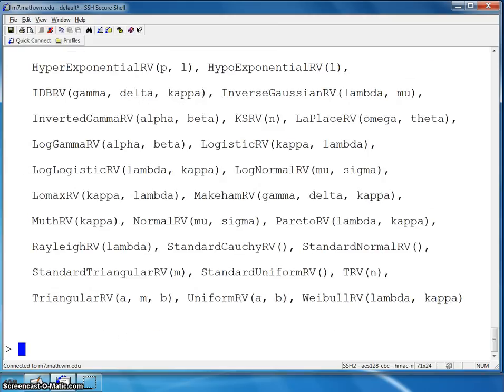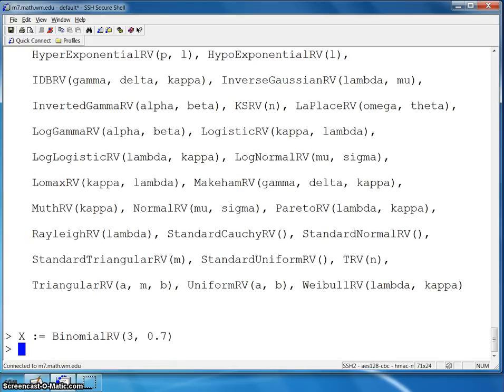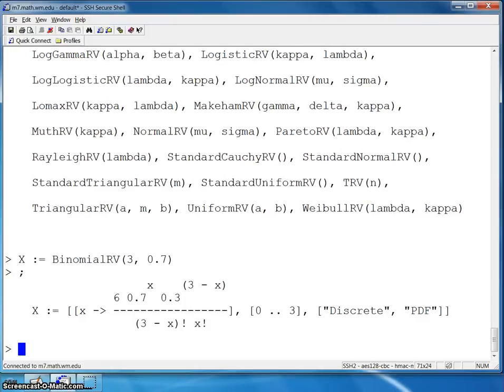let me do a read of the APPL code. This way you can see the output as well. And the first statement here sets x to a binomial random variable with parameters 3 and 0.7. Now if I were to look at x, oops, I forgot, you have to end that with a semicolon.